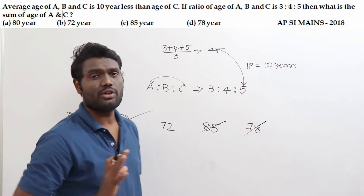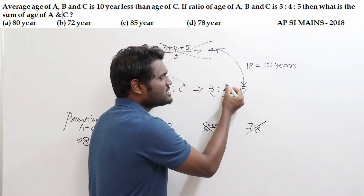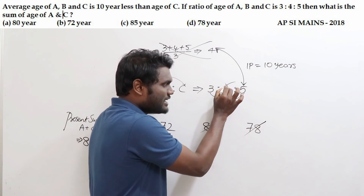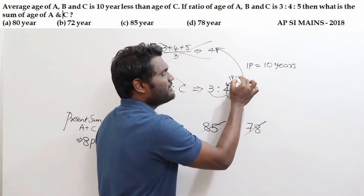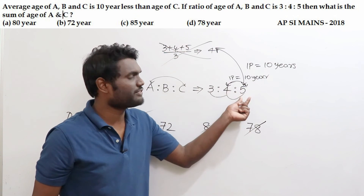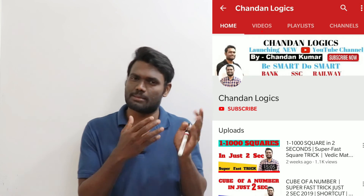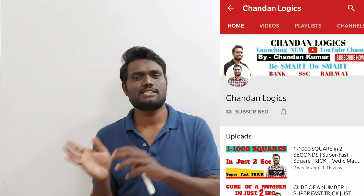This question was asked in a recent competitive examination. Even the calculation is simple: average of 3, 4, 5 is the middle term 4; age of C is 5; difference is 1 part = 10 years; sum of A and C = 8 parts = 80 years. Hope you enjoyed this session. If you found it helpful, please subscribe to our channel, click the bell icon, and share this video with your friends, family, and WhatsApp groups.